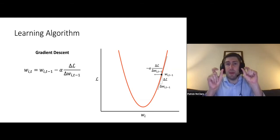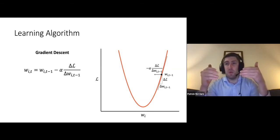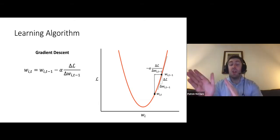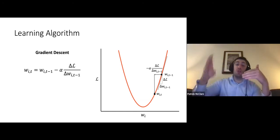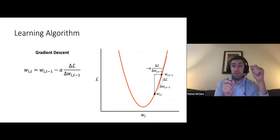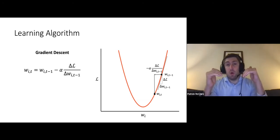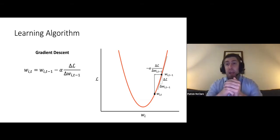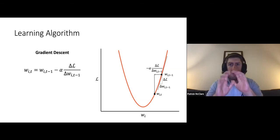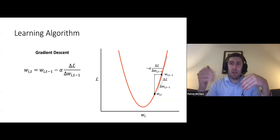Once we change the parameter based on the learning rate and estimated gradient, we get a new parameter setting. Gradient descent repeats this iteratively until reaching a weight where changing the parameter does not meaningfully change the loss. This happens at a minimum of the function — it may be only a local minimum and not a global minimum, but gradient descent will converge to a local minimum.